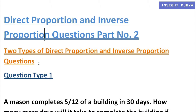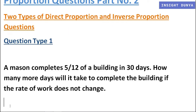Here is the first type of question: a Mason completes 5 over 12 part of a building in 30 days. How many more days will it take to complete the building if the rate of work does not change? As mentioned in the question, 5 over 12 part of the work is completed in 30 days.